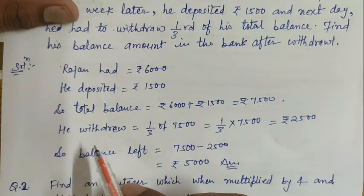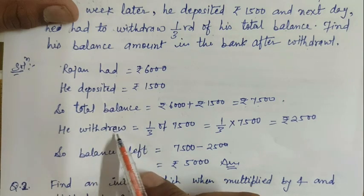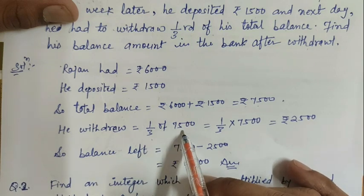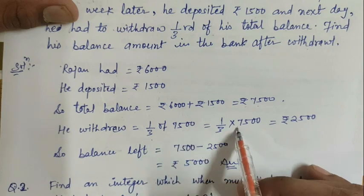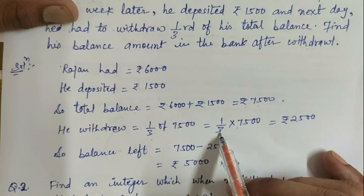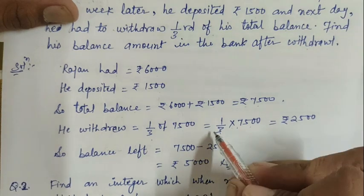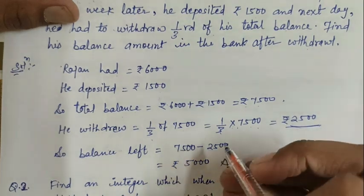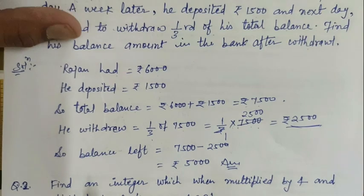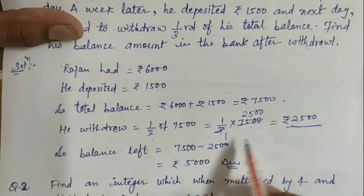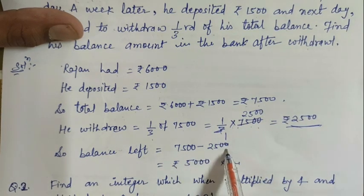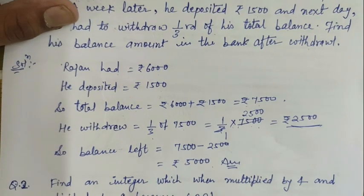Now he withdrew one third of total balance 7500. So 'of' comes multiply: 1/3 × 7500. Cancel out, so how much will be? 2500. 3 by 3, and 3 into 25 is 75, so 2500. So balance left: total was 7500, withdraw 2500, so balance left is 7500 - 2500 = ₹5000. This is the required answer.